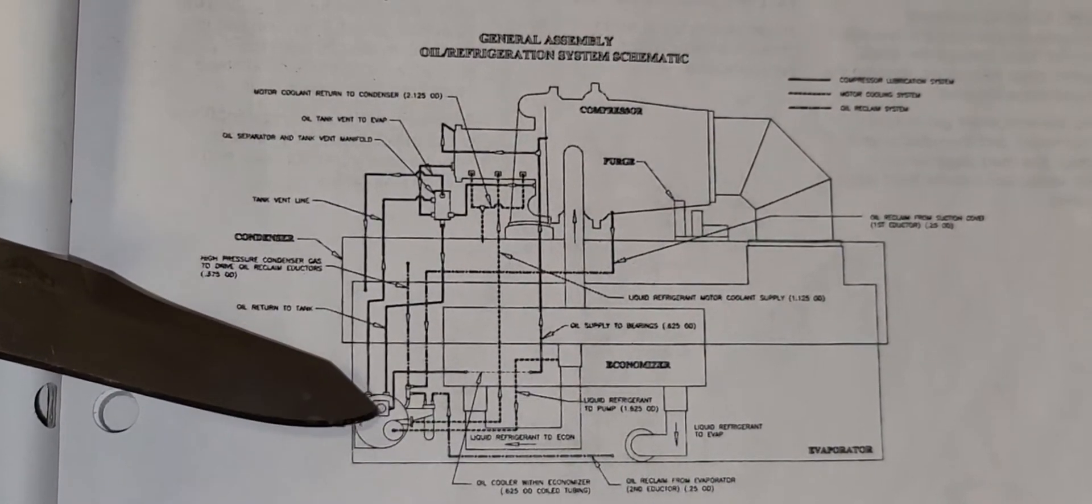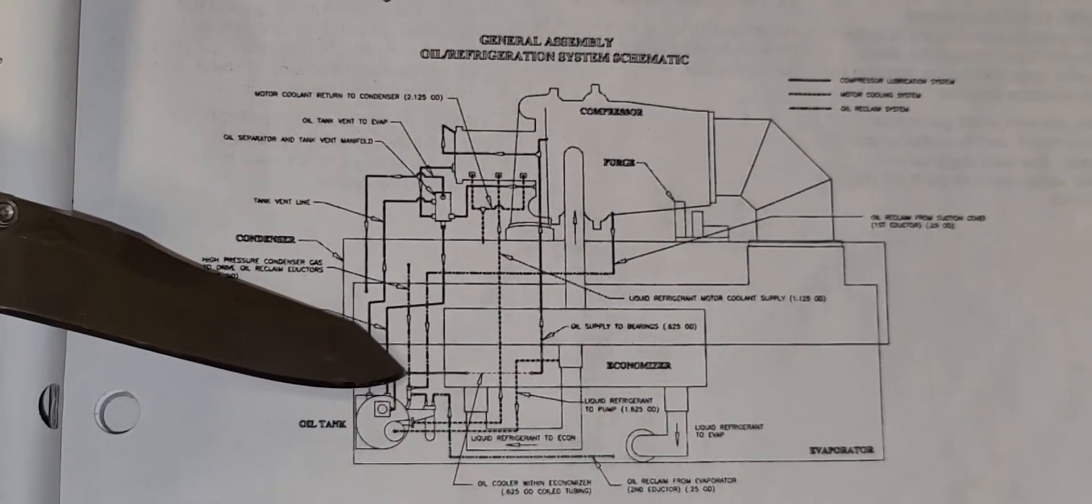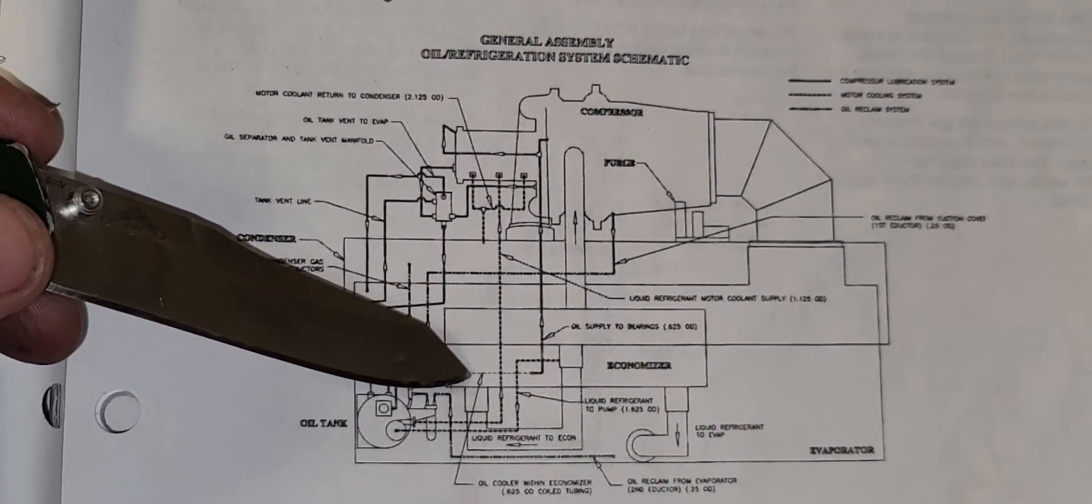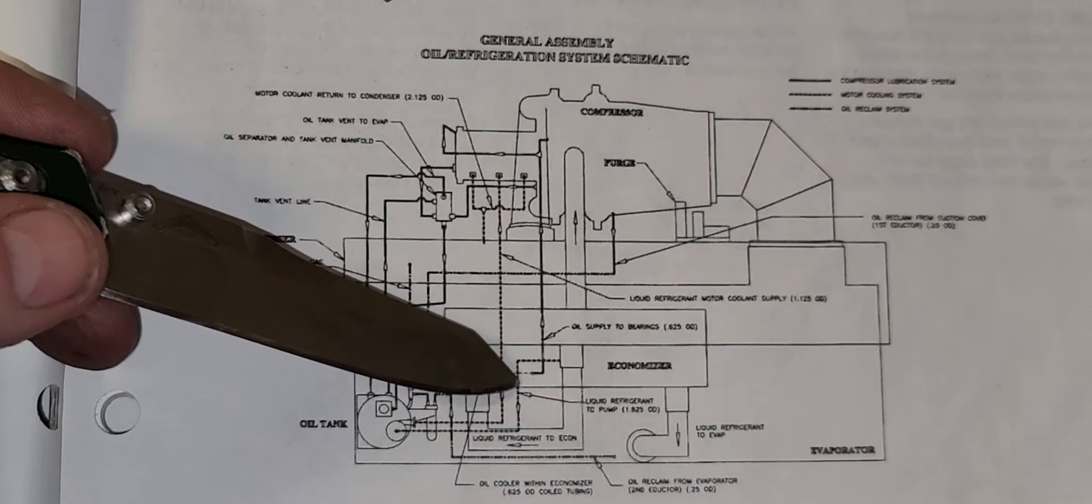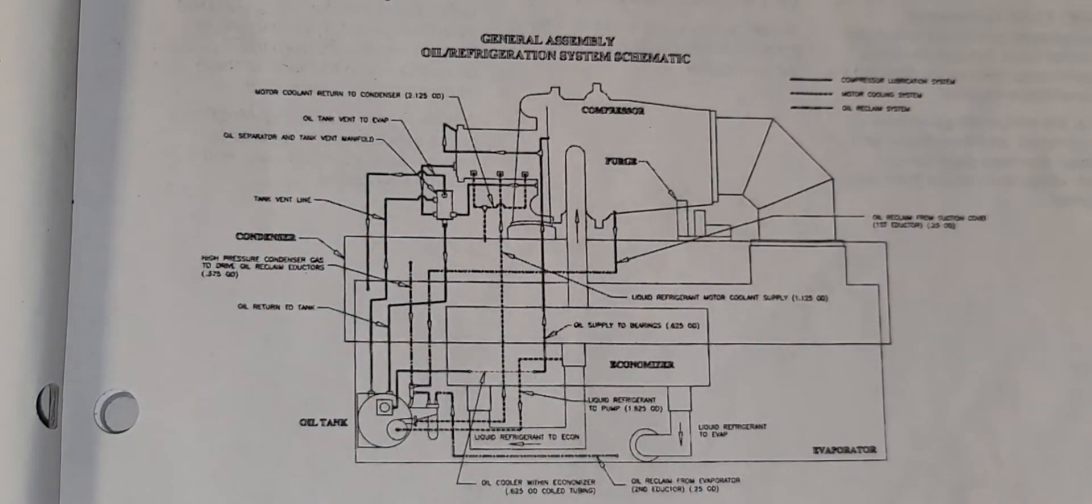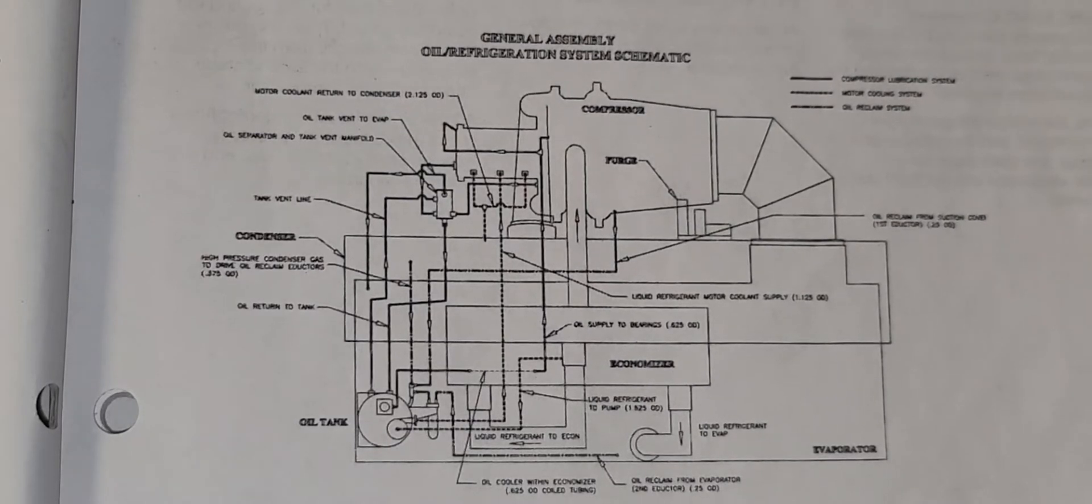Up here this is the oil regulator block. Oil is discharged here and this dashed line depicts an oil cooler inside the condenser. So obviously the heat is rejected in the liquid.